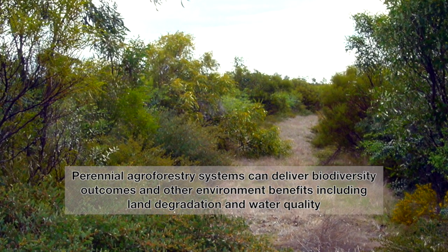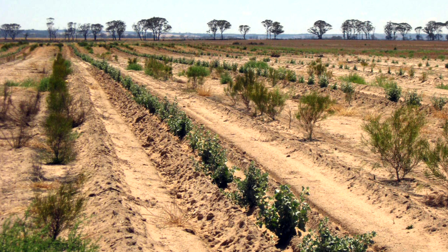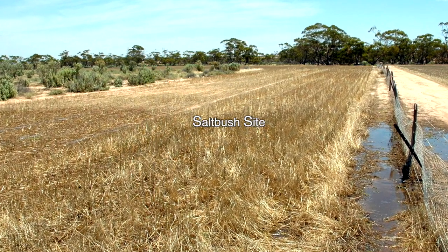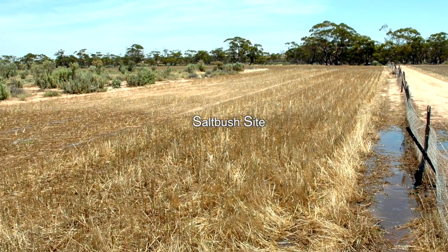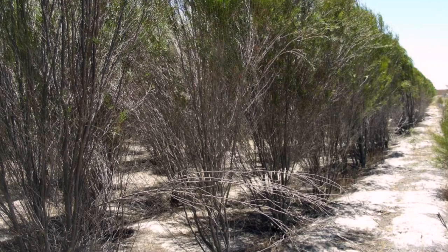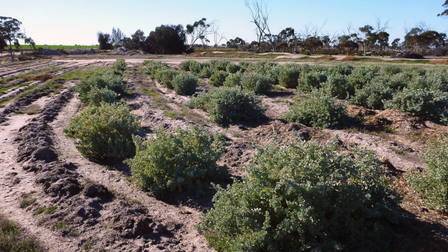Agroforestry systems are well integrated into farming systems by the creation of rows and alleys in which different crops are grown. Often these agroforestry systems are best integrated into farms by growing them in areas where other crops cannot be grown — for instance, in salty areas or waterlogged areas, where things like brushwood or saltbushes can be grown.